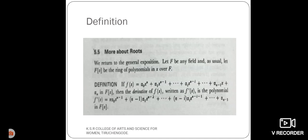plus alpha i X power N minus i plus etc. plus alpha N minus 1 into X plus alpha N, which belongs to the ring of polynomials F of X. Then, the derivative of F of X...